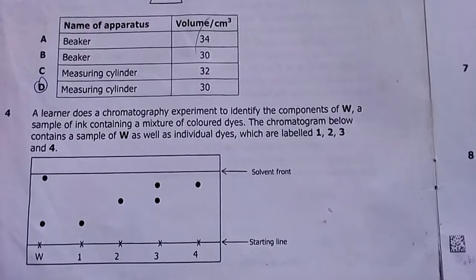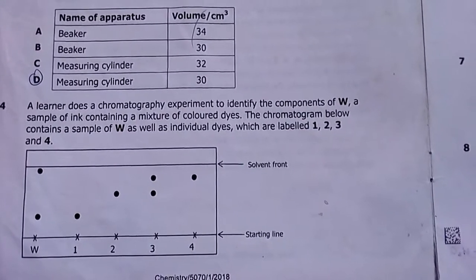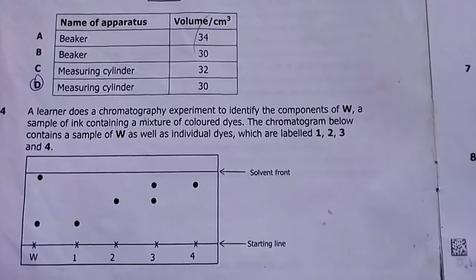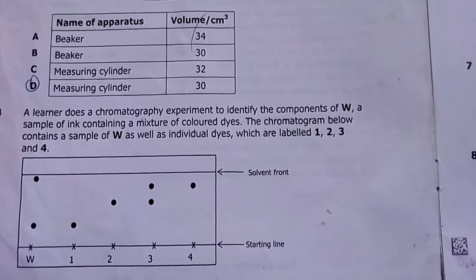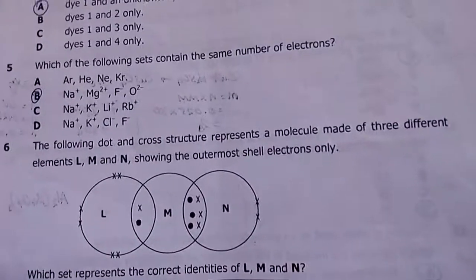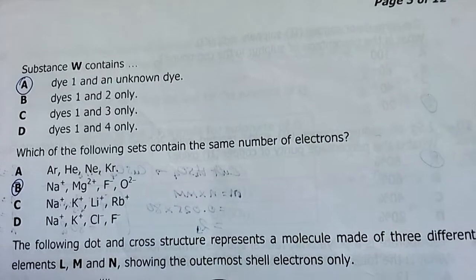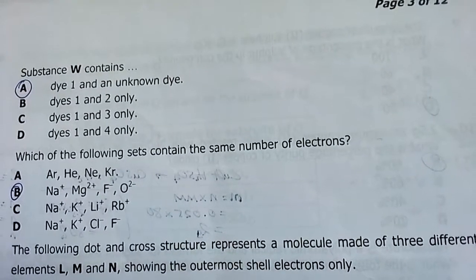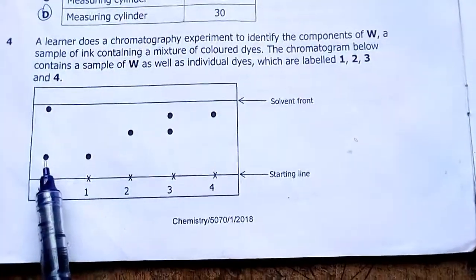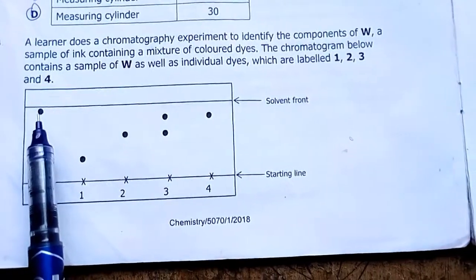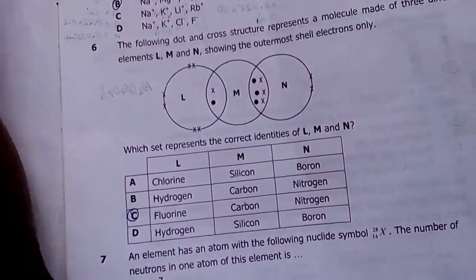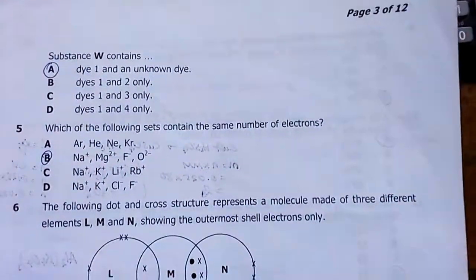Number four: Elena does a chromatography experiment to identify the components of W, a sample of ink containing a mixture of colored dyes. The chromatogram contains sample W as well as individual dyes labeled one, two, three and four. Substance W contains dye one and an unknown dye — there's no other matching dye — so this unknown one is present. Our answer is A.